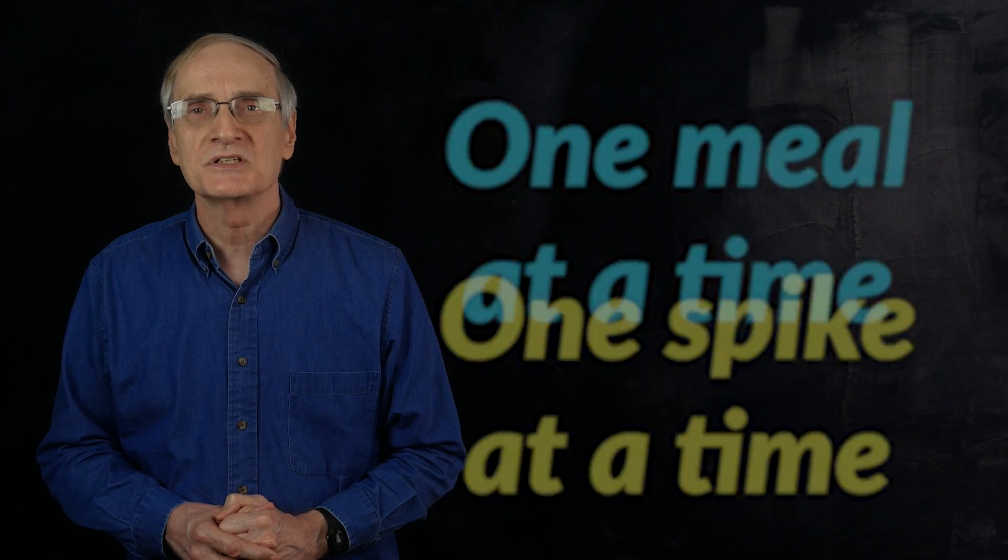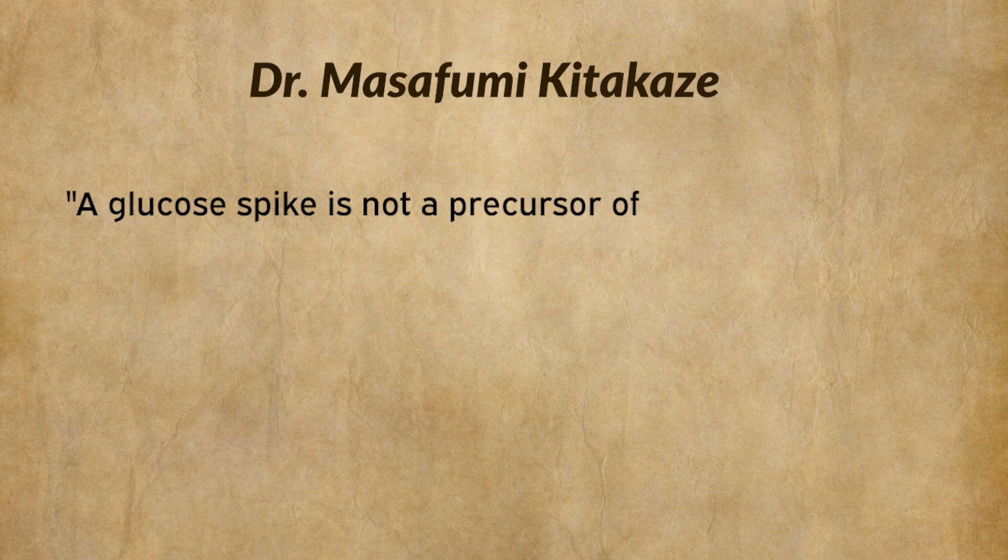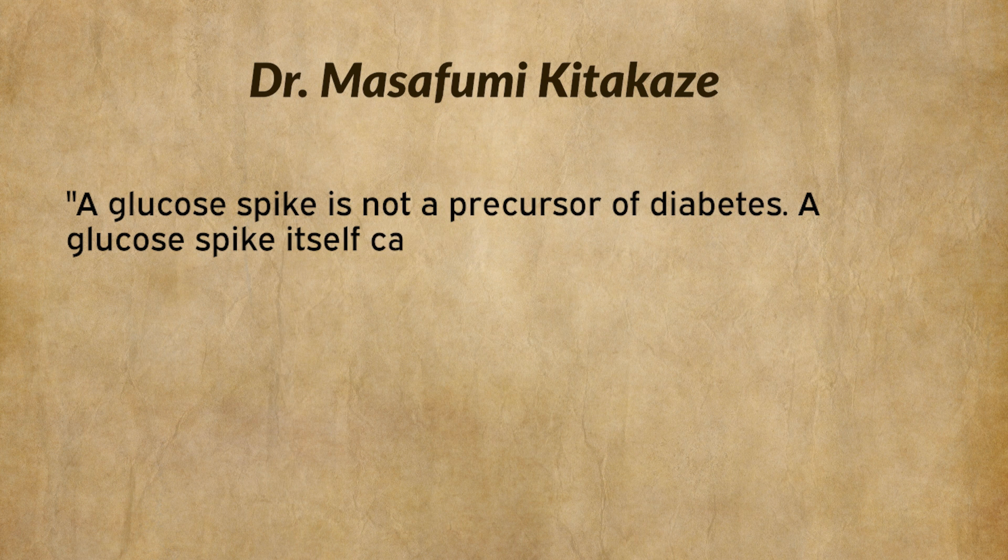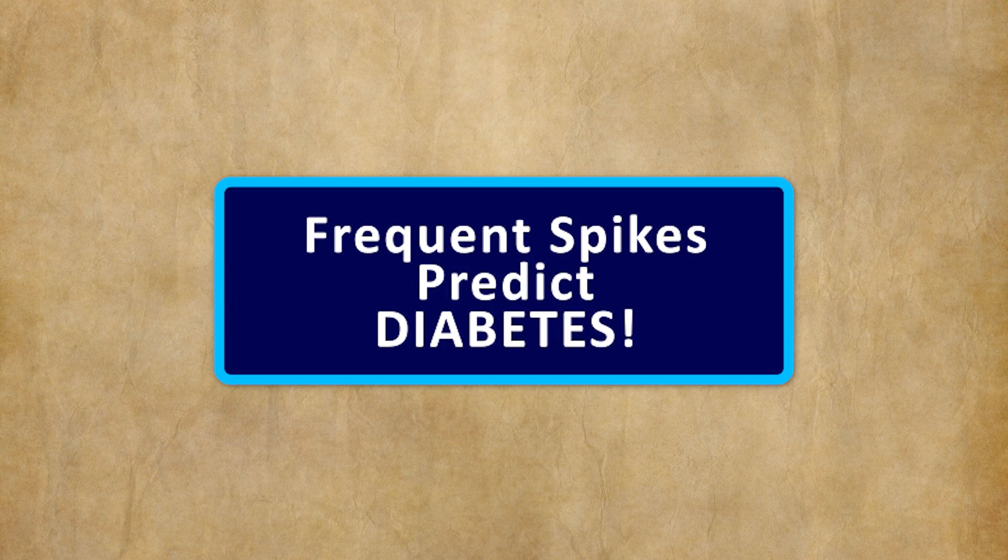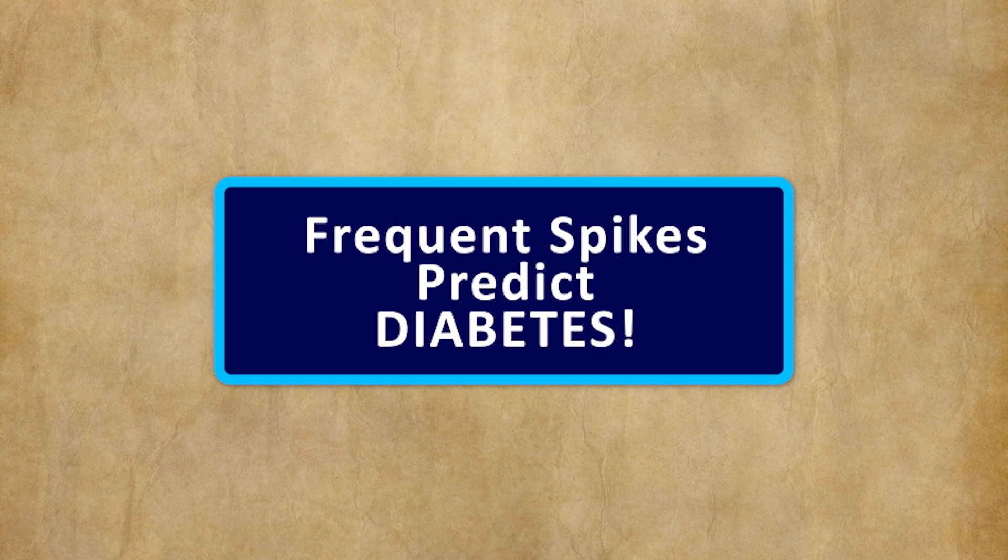Dr. Masafumi Kitakazi also stated, a glucose spike is not a precursor of diabetes. A glucose spike itself can be called a disease. It damages the heart. It damages the blood vessels. It is causing cardiovascular disease. Now, I'll have to say I disagree with the idea that regular glucose spikes are not a precursor of diabetes. I believe that glucose spikes are probably the very best indicator of diabetes that's ahead. But I do agree with his main point that glucose spikes, all by themselves, perhaps a decade or more before you're diagnosed with diabetes, are already doing you significant harm.